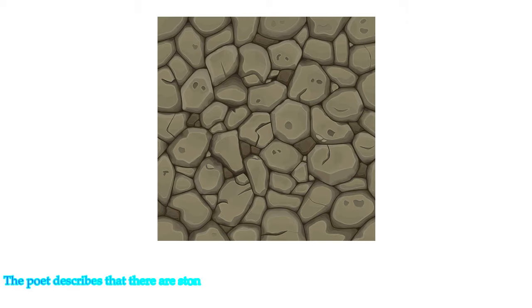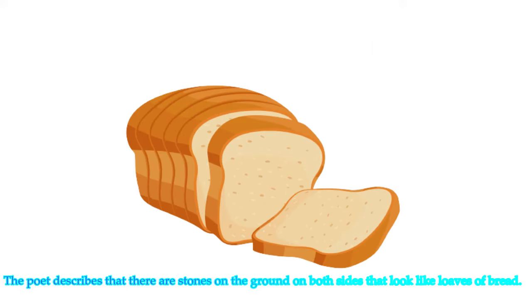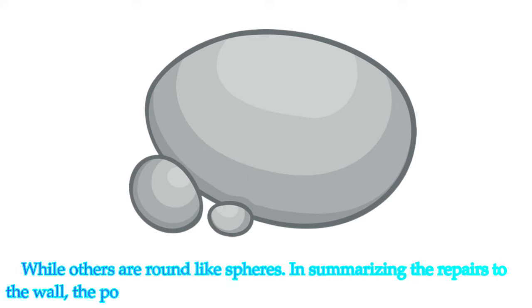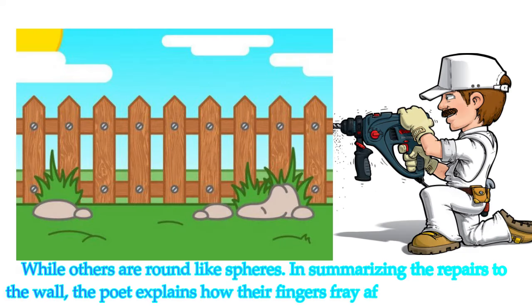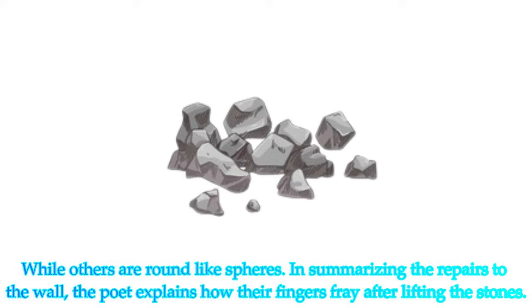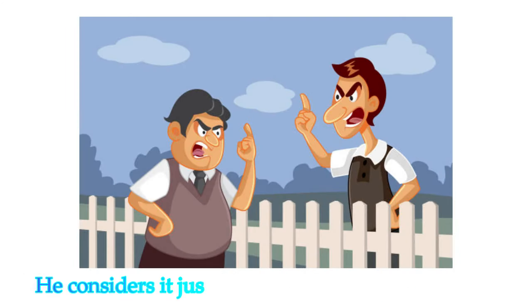The poet describes that there are stones on the ground on both sides that look like loaves of bread, while others are round like spheres. In summarizing the repairs to the wall, the poet explains how their fingers fray after lifting the stones. He considers it just an activity and nothing more.